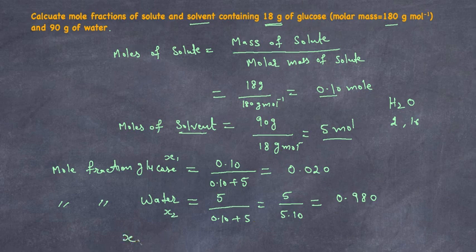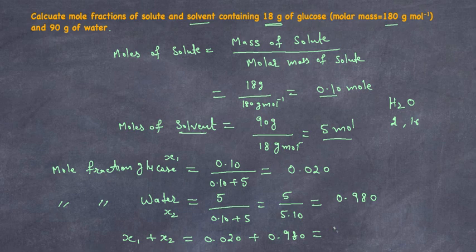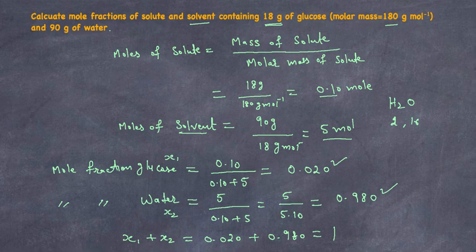Let's call this x1 (glucose) and x2 (water) and verify: x1 plus x2 equals 0.020 plus 0.980, which equals 1. This confirms that if you know the mole fraction of glucose, you can subtract it from 1 to get the mole fraction of water. That's it for mole fraction. I'll make more videos on problems involving mole fraction, molarity, and molality. Please share, subscribe, and like. Thank you, have a good day!